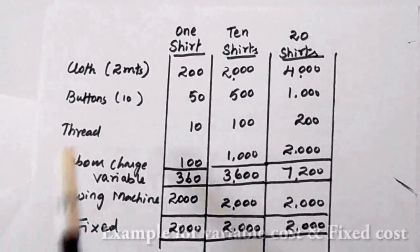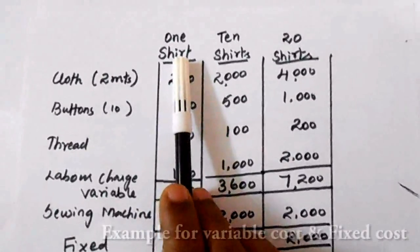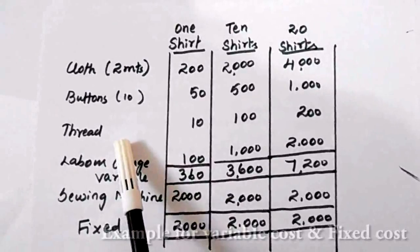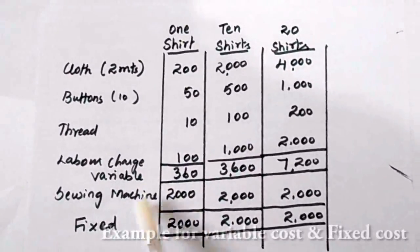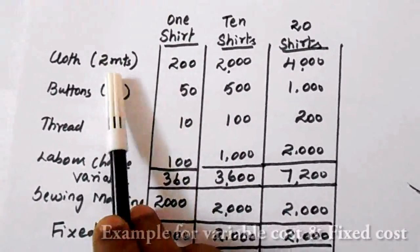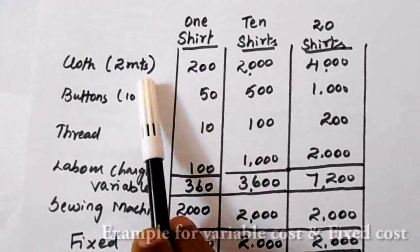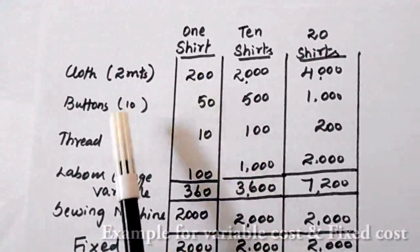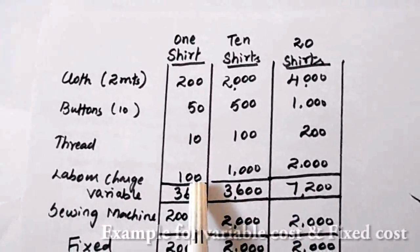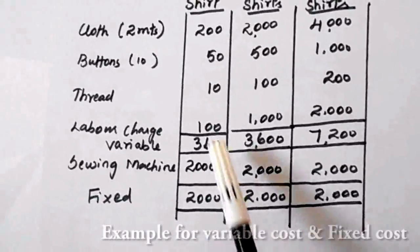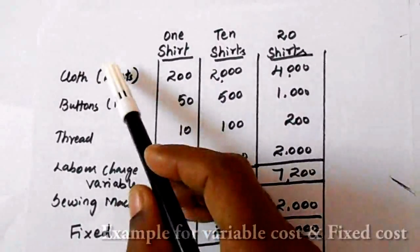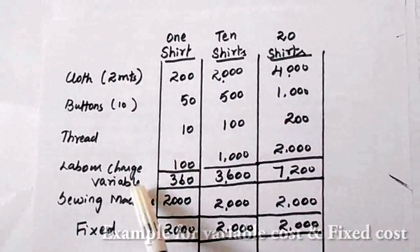Let me explain variable cost and fixed cost with an example. To stitch one shirt, the required items are: two meters of cloth, ten buttons, one thread, labor charge, and a sewing machine. For one shirt, two meters at 200 rupees per meter costs 400 rupees; 50 rupees for buttons; 10 rupees for thread; and 100 rupees labor charge. You need to identify which items are variable cost and which are fixed cost. All these items — cloth, buttons, thread, and labor — are variable costs, and the sewing machine is a fixed cost.